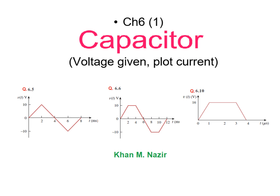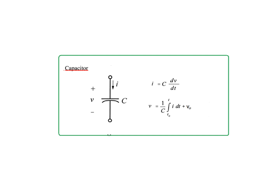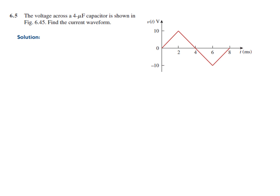Bismillahirrahmanirrahim. This video is on the request of a student and here we'll be learning how to plot current curves if voltage curves are given for a capacitor. We'll primarily be solving end-chapter problems: question number 6.5, 6.6, and 6.10. I hope you recall that the capacitor current is given by I = C dV/dt and the capacitor voltage is given by V = (1/C)∫I dt + V₀.